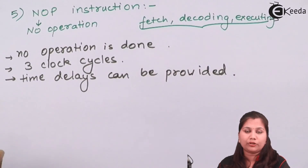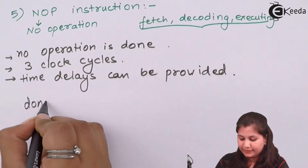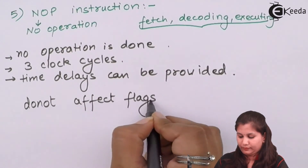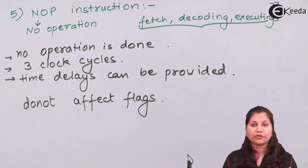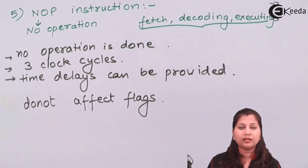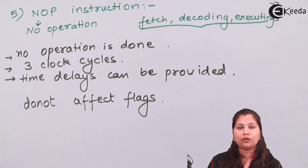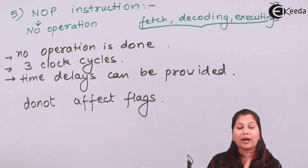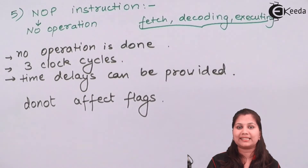All these machine control instructions do not affect the flags. So here we studied the machine control instructions present in the instruction set of the 8086 microprocessor. We studied five instructions under this category: HALT, WAIT, ESCAPE, LOCK, and NOP. All these instructions are machine control instructions because they are controlling the operations of the 8086 microprocessor.